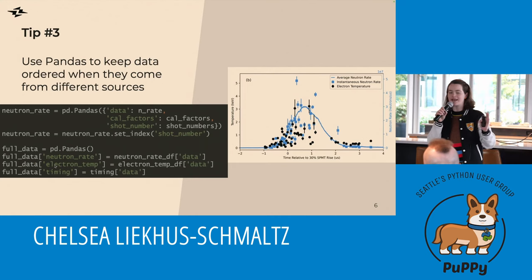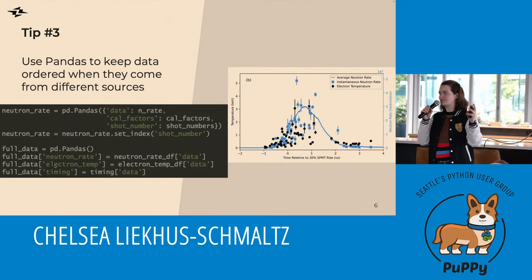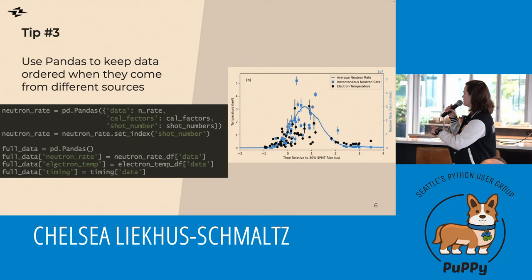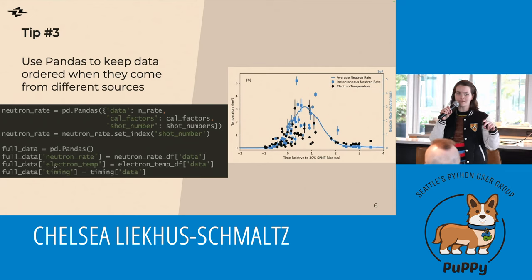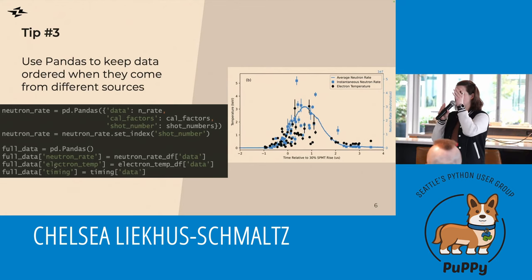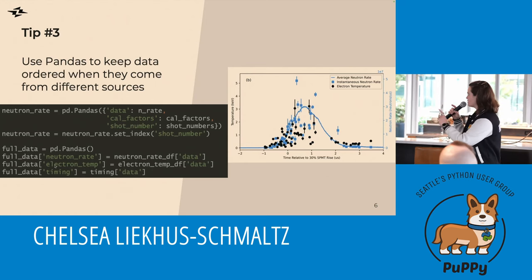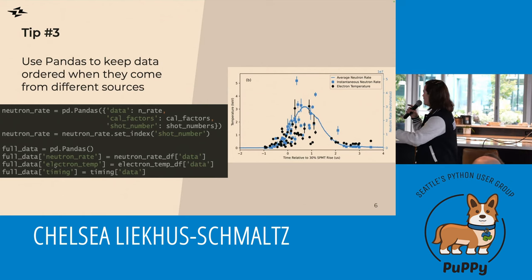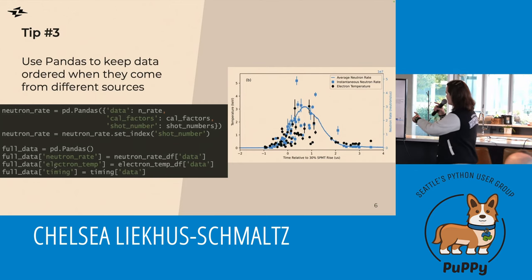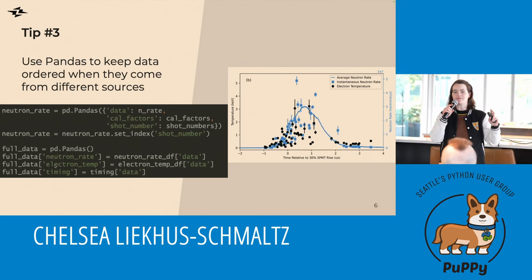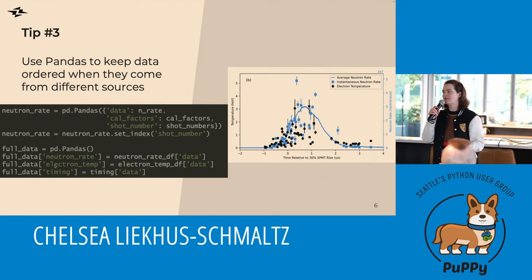Tip number three is to use pandas to keep your data paired up properly. In data analysis we have lots of different sources of data, and we have to pair them up properly to make the plot and have the right x, y coordinates. In this particular example, I had three streams of data: neutron rates, temperature, and the time when the measurement was taken — all coming from different places. I don't want to accidentally shift my arrays by one index and mess the whole thing up. So I use a pandas DataFrame, set my index properly using a unique ID called the shot number that all my data shares, put all the DataFrames together, and know that they're already paired up properly. That will save you a lot of headaches.